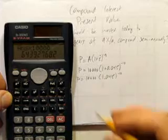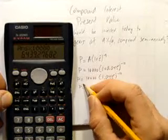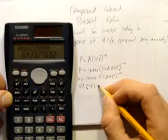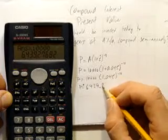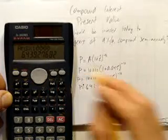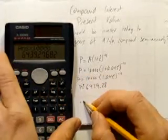And you get your final answer calculator rounded. So we'll put a rounding dot. $6,439 and approximately got to round up 28 cents.